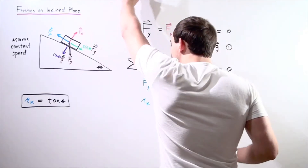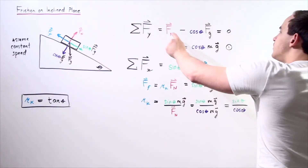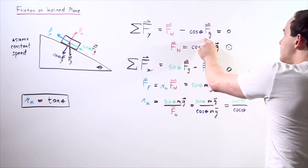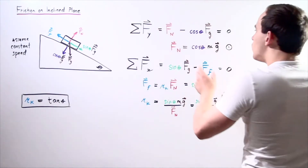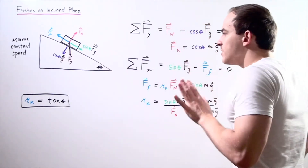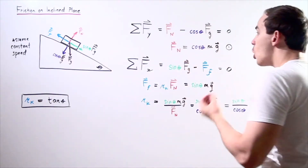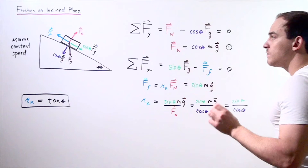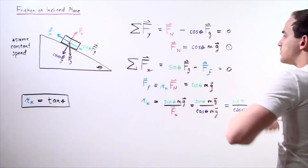Let's sum up all the forces acting along our y-axis. We choose going upward to be positive and downward to be negative. We have the normal force minus the cosine of the angle theta times the gravitational force equals zero. Rearranging, we see that the normal force is equal to the cosine of the angle theta multiplied by the magnitude of our gravitational pull — mass times g.